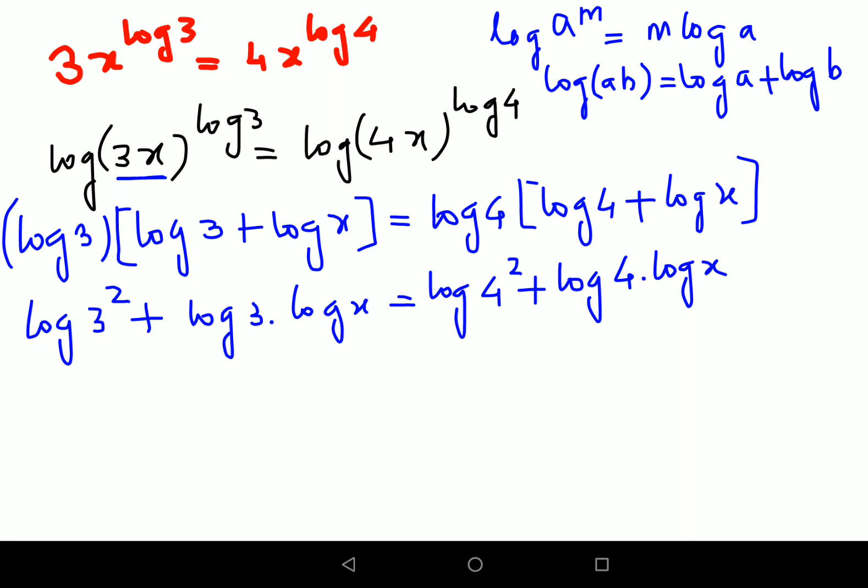Now what we will do next is we will keep the constants on one side and the variables on the other side. So we will have log 3 square minus log 4 square equals to here we will take log 4 into log x minus log 3 into log x.